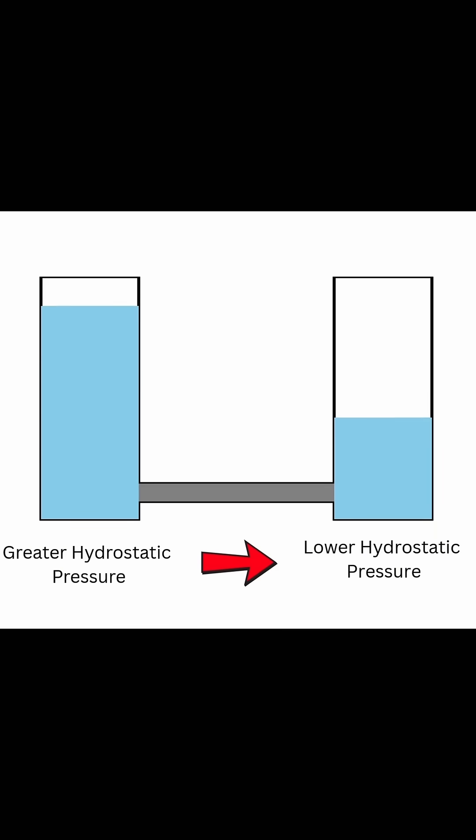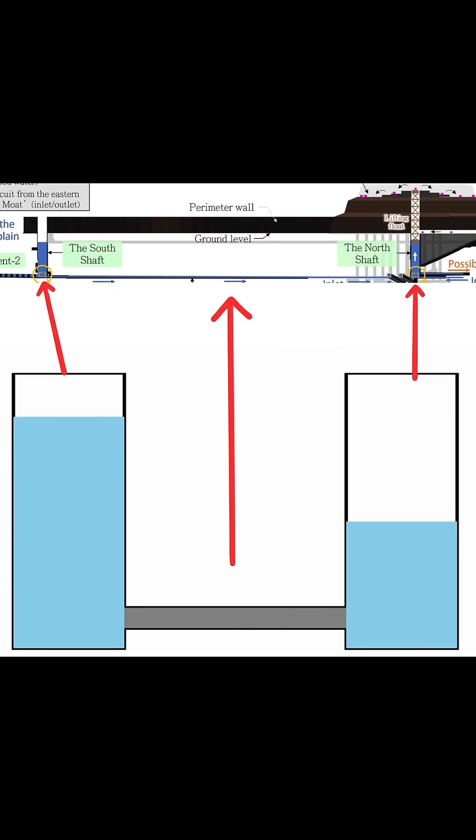we know that unless the Egyptians had built a water tower as tall as they wished to lift a block with floating, a modular system of lifting needed to be used by digging down.